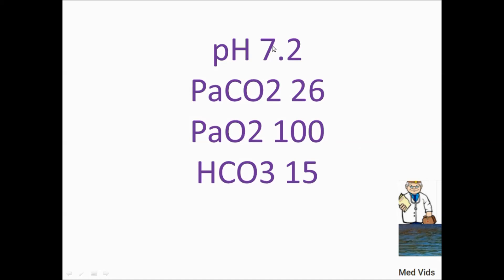Here is a worked example: pH 7.2, PaCO2 26, PaO2 100, bicarbonate 15. Step one — pH 7.2 is acidosis. Step two — PaCO2 is decreased, so it is not respiratory acidosis. Step three — bicarbonate is also low. Both pH and bicarbonate being low suggest metabolic acidosis, and the bicarbonate is not compensating.